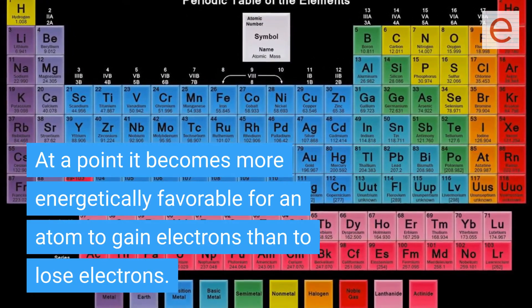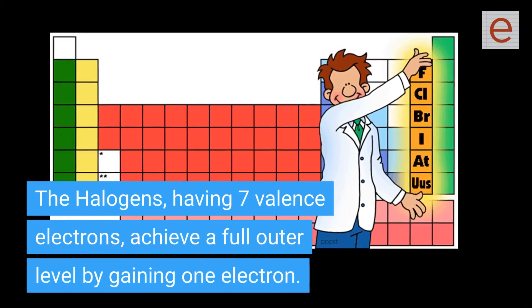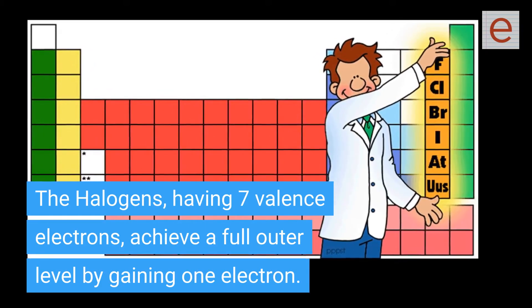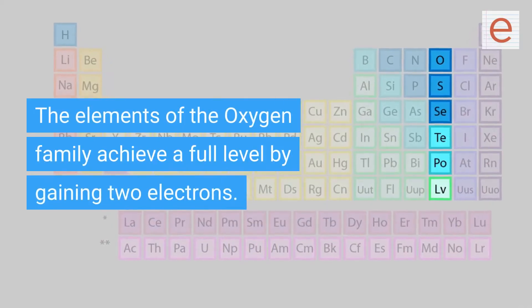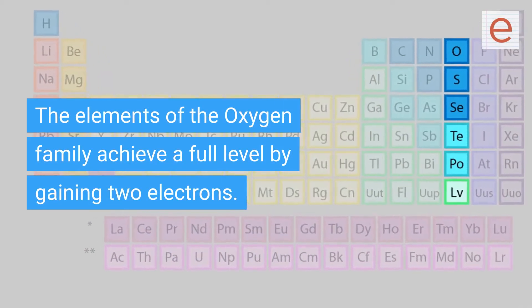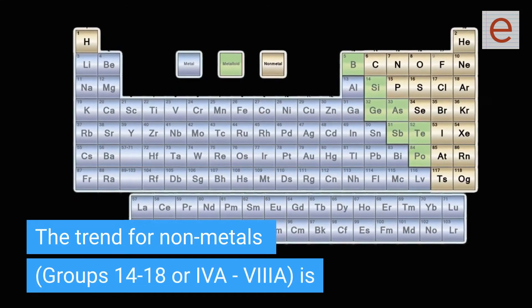The halogens, having seven valence electrons, achieve a full outer level by gaining one electron. The elements of the oxygen family achieve a full level by gaining two electrons.